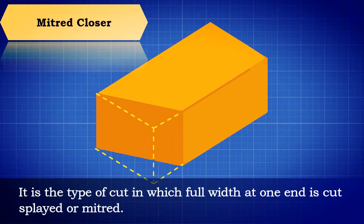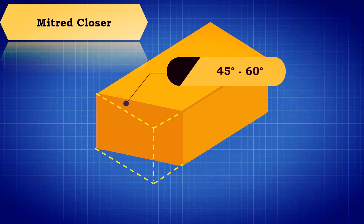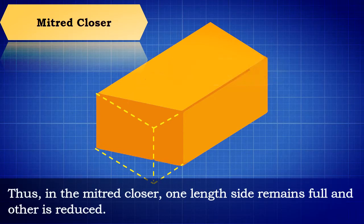Mitered Closer: It is the type of cut in which full-width at one end is cut splayed or mitered. Generally, the angle of splayed varies from 45 degrees to 60 degrees. Thus, in the mitered closer, one length side remains full and other is reduced.